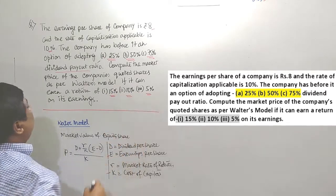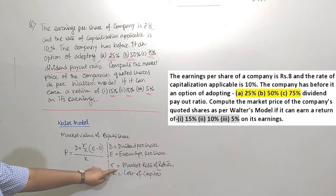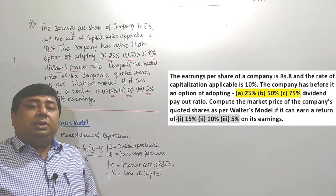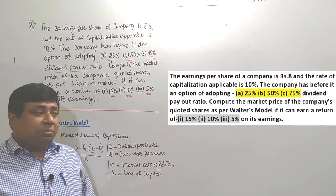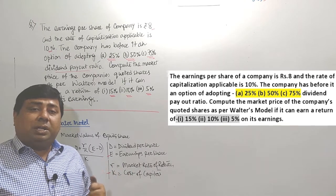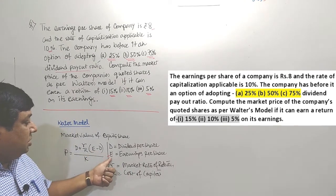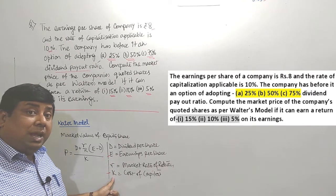Three specific return rates are also available: 15%, 10%, and 5% on its earnings. That means 3 into 3, you are getting 9 specific answers depending upon the question. Where your E is remained as rigid and K is also remained as rigid in every 9 cases.